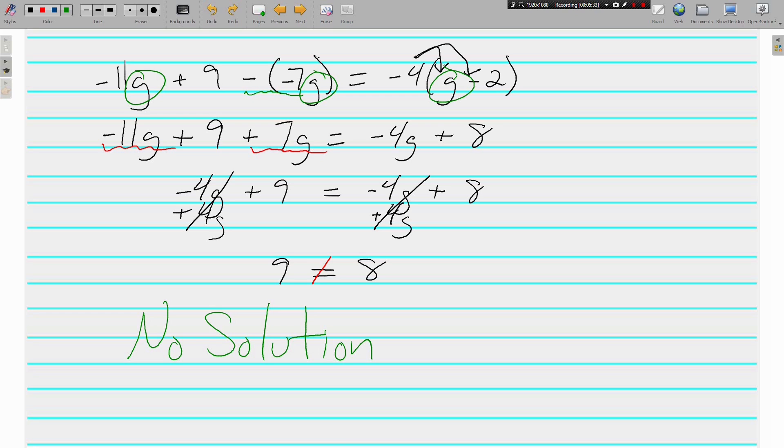So those are our three different solution sets. We've got one solution, which is what we've been working with. We have identities, which means you can substitute in any number and it will make it true. And there's no solution where there's no number that you can substitute in to make it true. If you have questions, write them down. We'll talk about them soon. See ya!